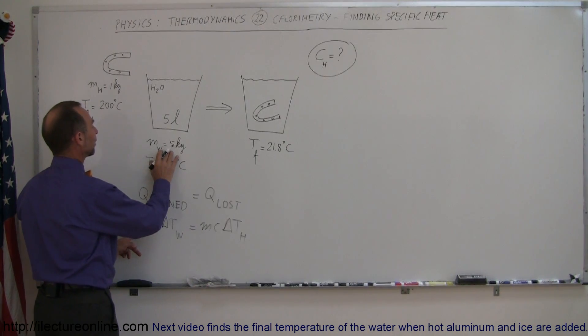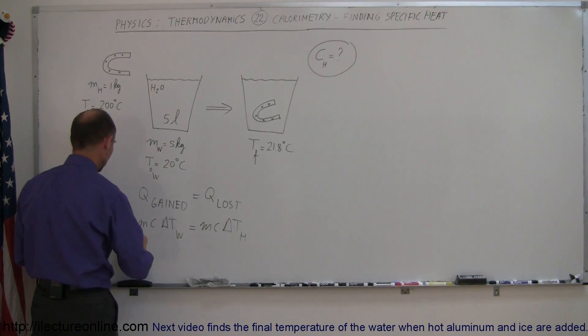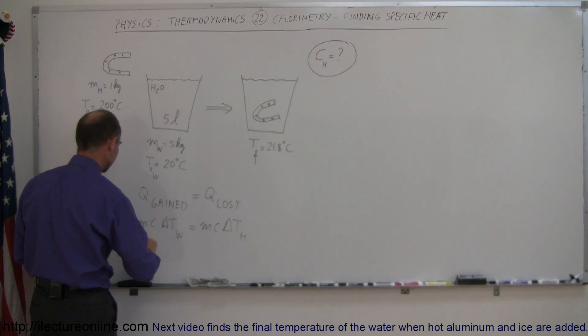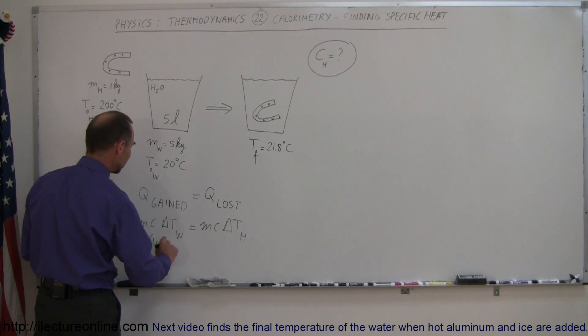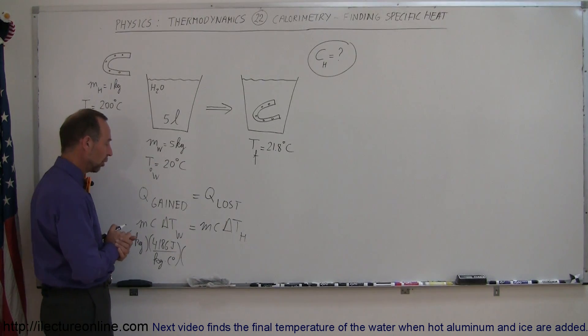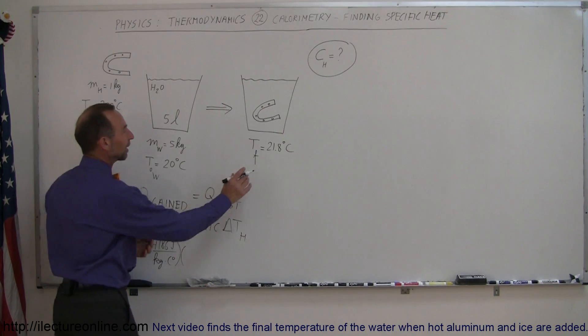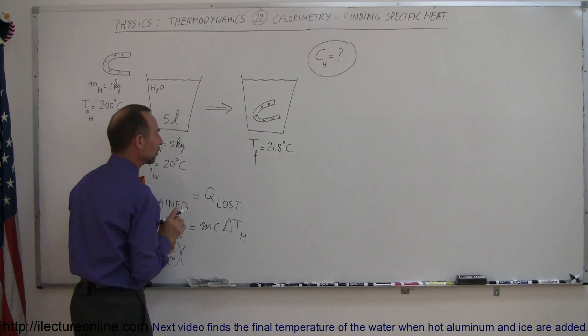The mass of the water would be 5 kilograms, because the water has a mass of 1 kilogram per liter. So we have 5 kilograms of water times C. The C for water is 4186 joules per kilogram per centigrade degree. And the change in the temperature would be the final temperature, 21.8 degrees centigrade, minus initial temperature, 20 degrees centigrade.